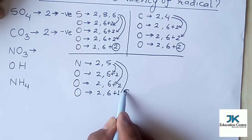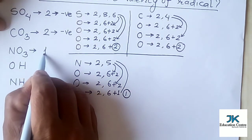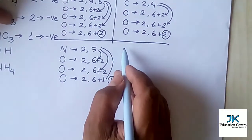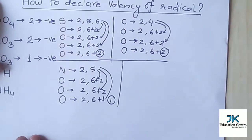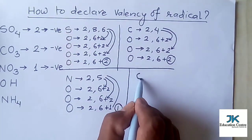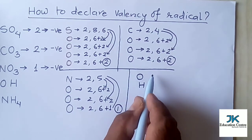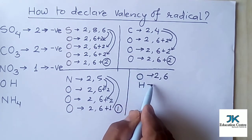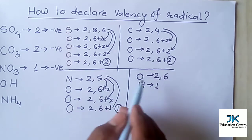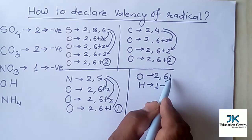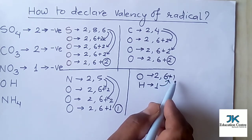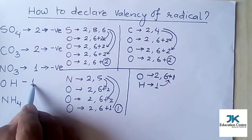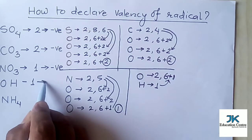Since the third oxygen still needs one more electron, the valency of nitrate is one. It requires one electron, so it is electronegative. For hydroxide: oxygen has electronic configuration 2 and 6, and hydrogen has only one electron. Hydrogen gives its one electron to oxygen, making seven electrons in the outermost shell. To form an octet, one electron is still missing — so hydroxide's valency is one and it is electronegative.